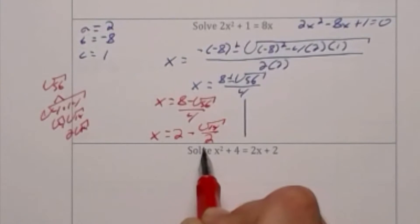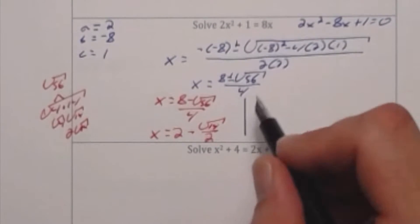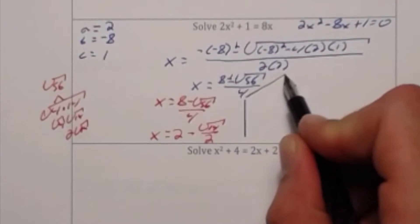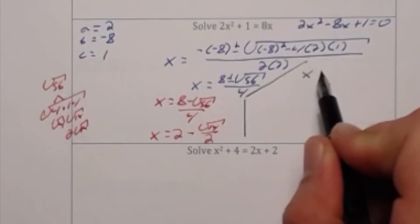When I begin on the green side, I'm going to start with x is equal to 8 and now it will be plus radical 56 all divided by 4.